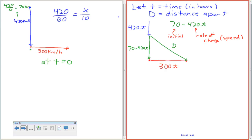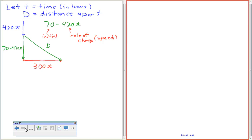How do I find D? Pythagorean theorem. We're going to use that. So D squared equals (70 - 420t) squared plus (300t) squared.